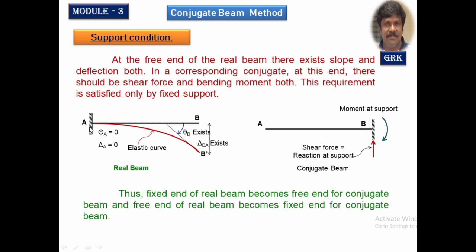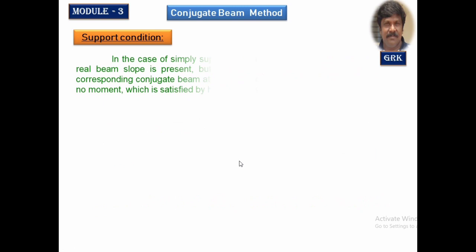In the case of a conjugate beam for a cantilever, the fixed end becomes free and the free end becomes fixed. This is what we assume to get the slope and deflection at the free end. If you want the values anywhere between A and B, you can calculate with the same concept.